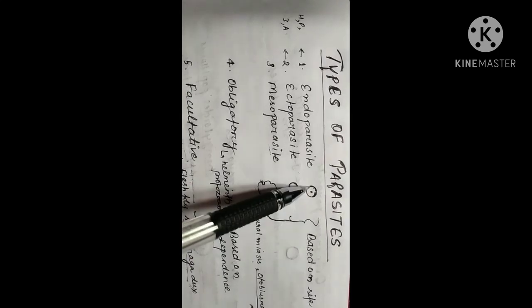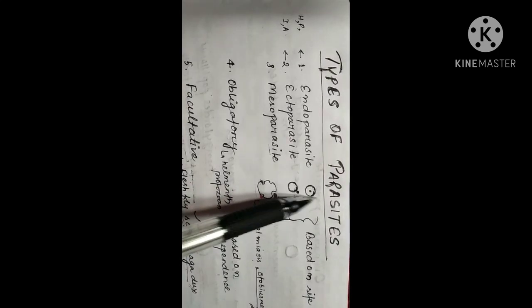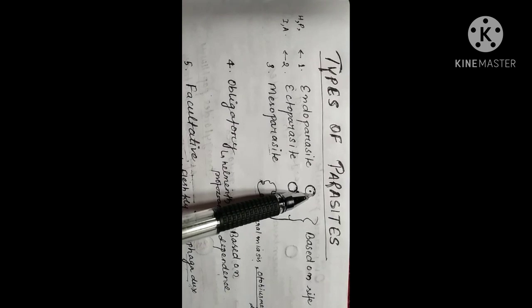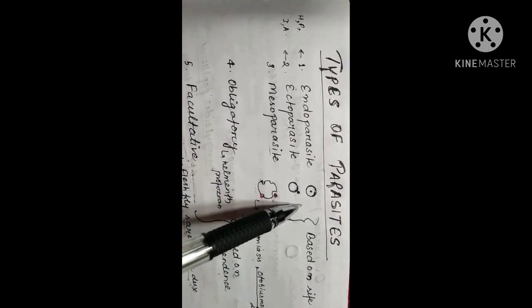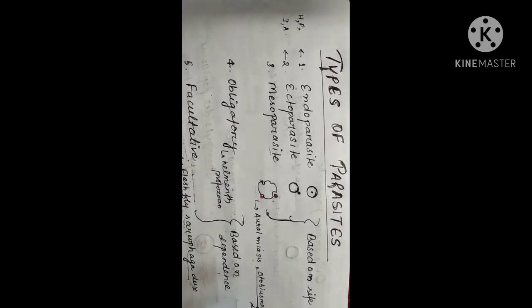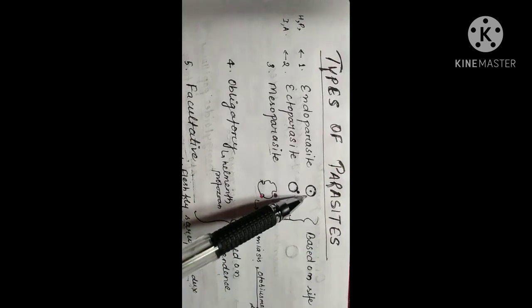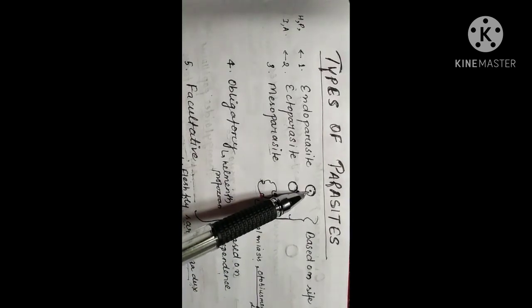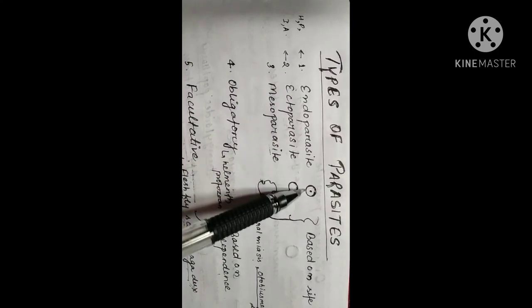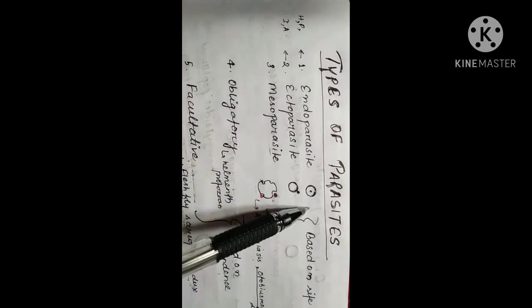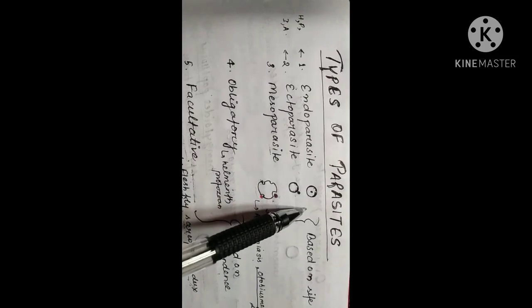Endoparasites are those parasites which reside inside the body of a host. Inside, they can be found in places like the blood, in the lumen, or in the tissues. These parasites are called endoparasites. For example, helminth and protozoan parasites.